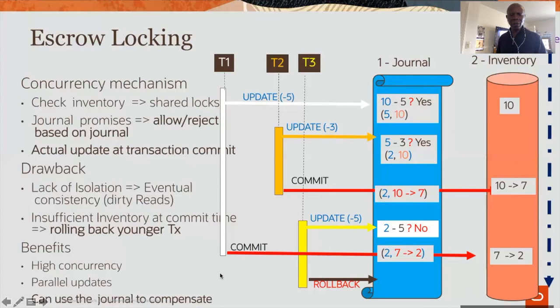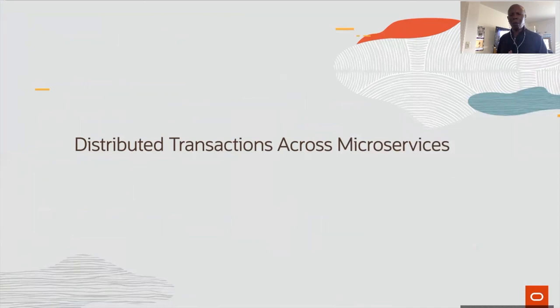The difference between escrow locking and optimistic locking is that in escrow locking, the younger transaction is forced to rollback, whereas in optimistic locking, it's the older transaction. The journal can also be used for compensation in distributed transactions. That's all for my part of the presentation. Paul will now talk about distributed transactions, all the challenges, and the solutions we provide.